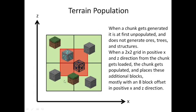Terrain population works as follows: if you generate a new chunk, it first doesn't generate all the blocks in it — it only generates stone, grass, and bedrock. Other blocks like ores and spawners only get placed afterwards if you load a 2x2 grid of chunks in the positive x and z direction when it populates. When it gets populated, it places blocks in a 16x16 area which is 8 blocks offset from the chunk for others of its population.